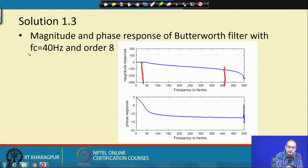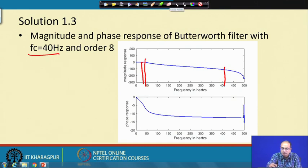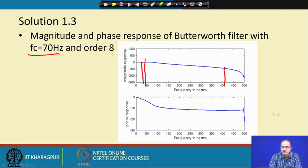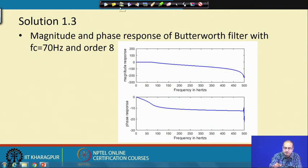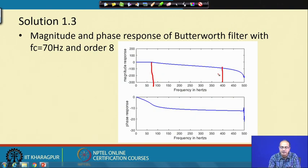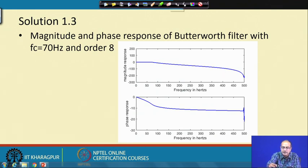For the third case, cutoff frequency is 40 hertz — the constant region extends to that point, then it decreases. For the fourth case, cutoff frequency 70 hertz, the flat region reaches up to 70 Hz. As cutoff frequency moves right, the suppression at high frequencies is not as prominent; model order has more impact on attenuation. The knee point also shifts to match the cutoff frequency.